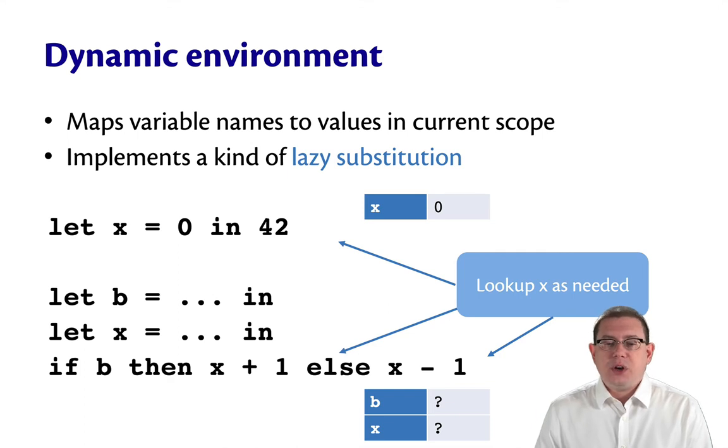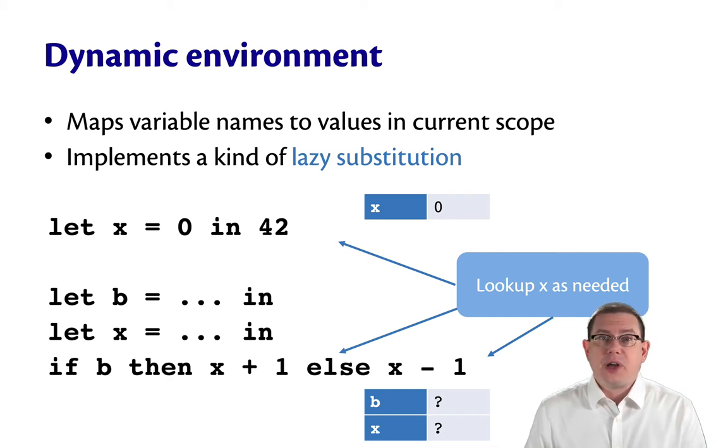All of the pieces of code here are going to look up those variable names, x in particular, as needed. In the very first case of let x equals 0 in 42, notice we won't even have to look up x there ever because x is not used at that point. So we've actually saved a little bit by not having to do that substitution actively.